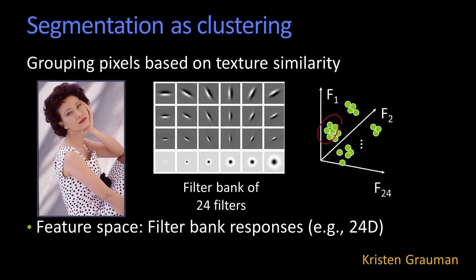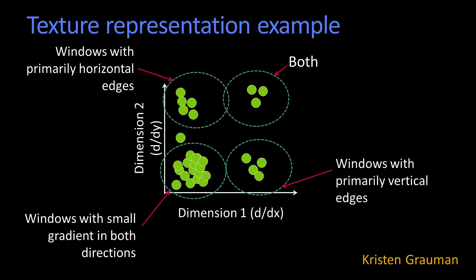That's what's being shown here — you have these clusters in this image space. Here's an example: if we take the derivative in the x direction, that's how much gradient there is going in the x direction at one particular scale — this is one dimension. And this is in the y direction, measuring gradient in the y direction. In this case, there are little areas that have windows that primarily have vertical edges, because they've got strong x gradient and no y gradient. Likewise, here's horizontal — this has a little window that would have texture in both. And these would be areas that have hardly any gradient at all.